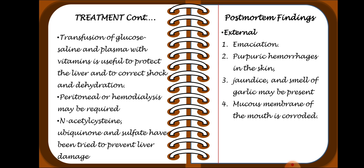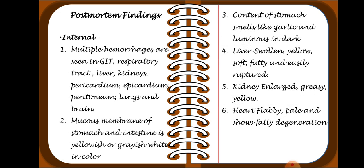Post-mortem findings: Externally, we find signs of emaciation, purpuric hemorrhages in the skin, jaundice, and a smell of garlic. The mucosal membrane of the mouth is corroded due to the luminous effect of phosphorus. Internally, multiple hemorrhages are seen in the GIT, respiratory tract, liver, kidney, pericardium, epicardium, peritoneum, lungs, and brain. The mucosal membrane of the stomach and intestine is yellowish and grayish-white in color. The stomach contents smell of garlic and are luminous in the dark.